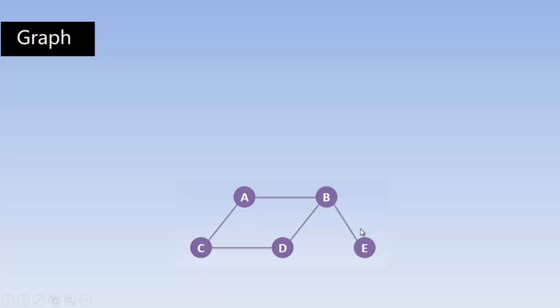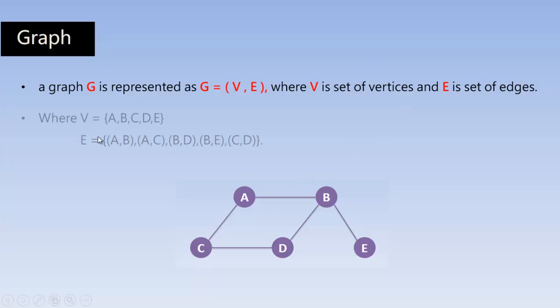You can also define a graph as: graph G is represented as G = (V, E), where V is the set of vertices and E is the set of edges. So V = {A, B, C, D, E}. V is the set of all vertices. A, B, C, D, E are the vertices here.